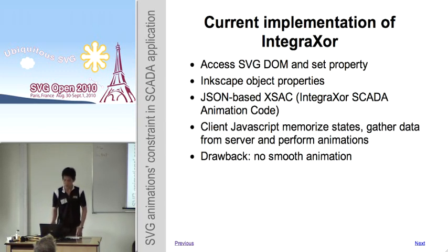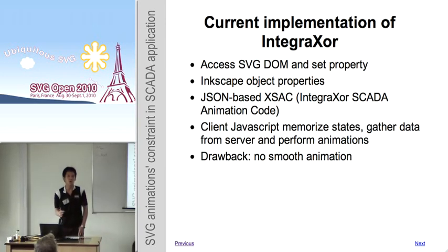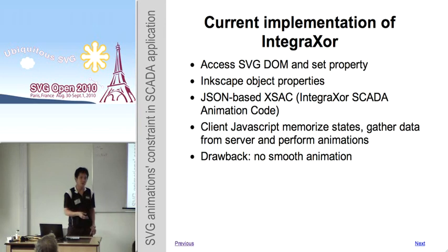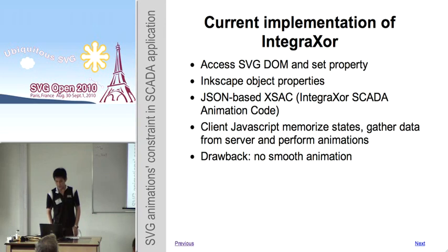To perform the animation, we use JavaScript to access the SVG DOM and change properties or attributes periodically. We have modified the SCADA object properties to create an interface for users to configure the animations of the object. This configuration is then converted into a JSON-based syntax called EXEC, which is the DAG code.